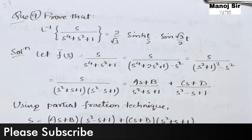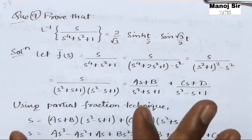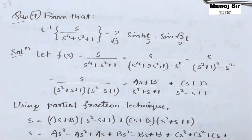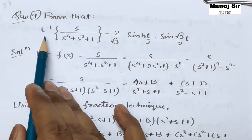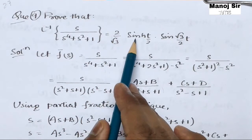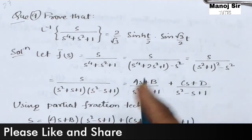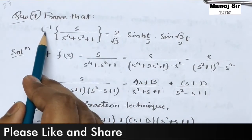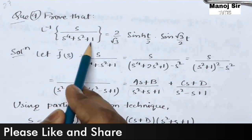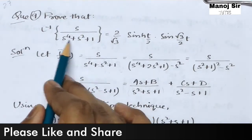Welcome to video number 27. In this video we are going to solve the ninth problem on inverse Laplace transform, one of the most important questions. Please watch till the end because you are going to learn a lot. The question is: prove that the inverse Laplace transform of s/(s⁴ + s² + 1) equals (2/√3) · sinh(t/2) · sin(√3t/2). Let F̄(s) = s/(s⁴ + s² + 1).